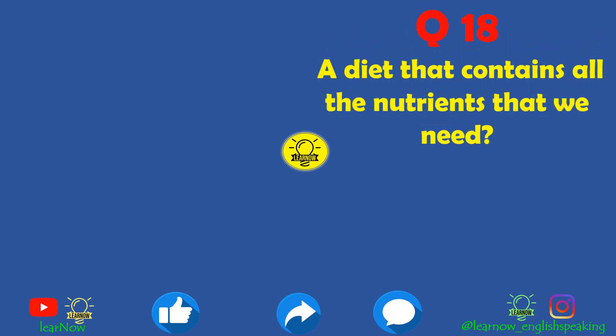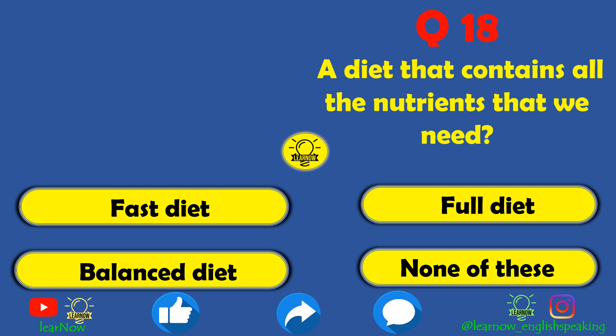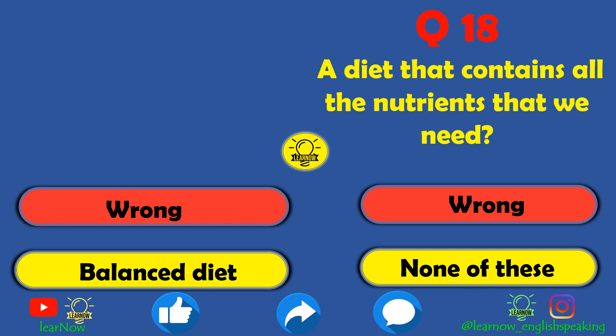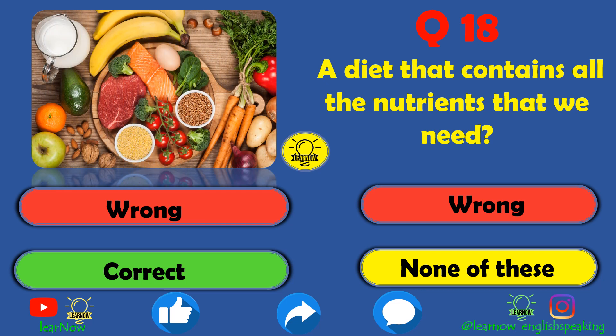Next question: a diet that contains all the nutrients that we need is called what? Fast diet is wrong, full diet is also wrong. Balanced diet is the correct answer. In the chapter 'From Tasting to Digesting' we talked about balanced diet — a diet which has all the nutrients that our body needs.